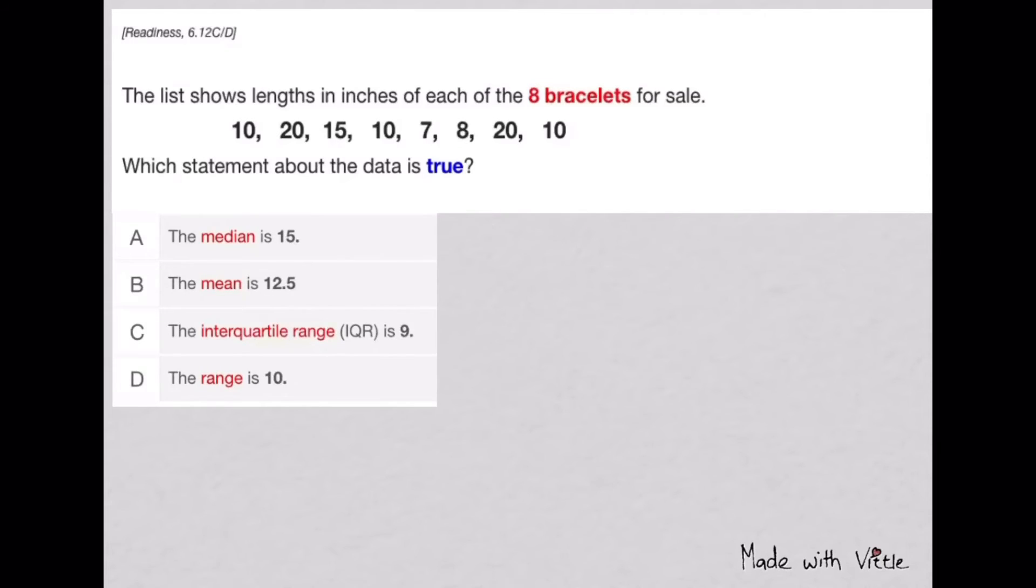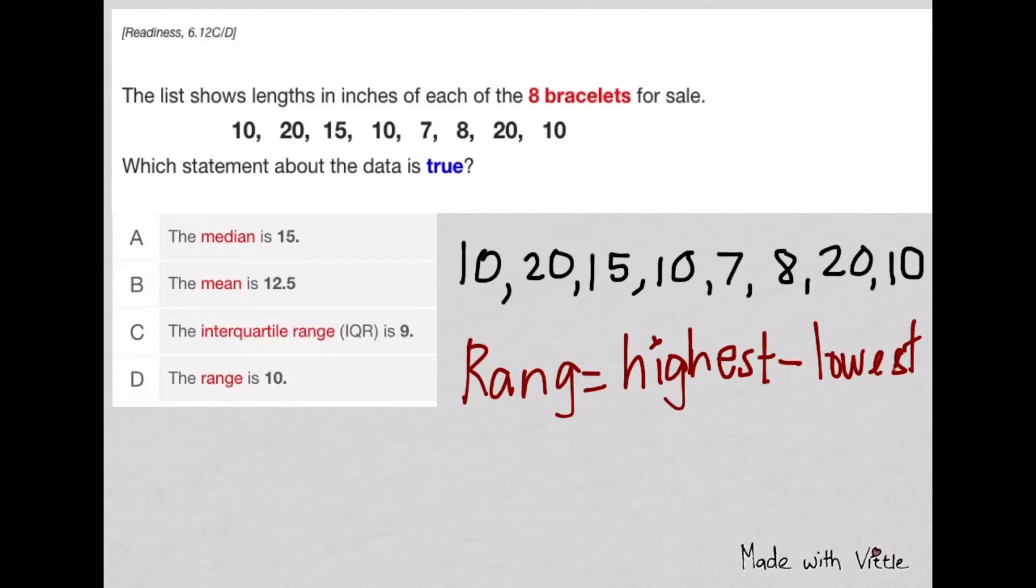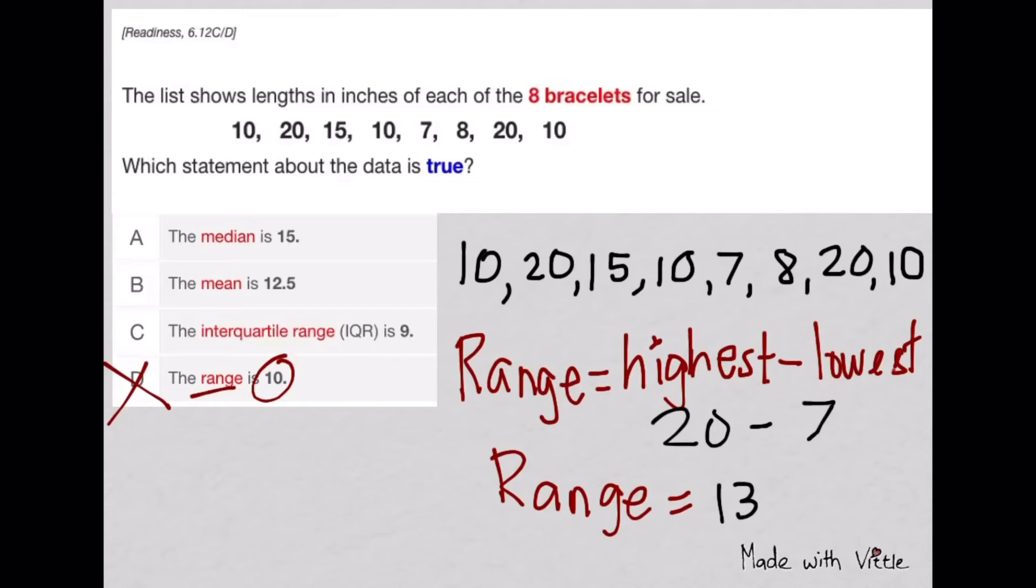The list shows lengths in inches of each of the 8 bracelets for sale. Which statement about the data is true? Copy the numbers down. After copying, find the easiest one first. Range is the easiest because you just subtract highest minus lowest. The range is 13, and look at letter D, it says 10, therefore cancel this because it's wrong. Then find the next one that's easier - median, the middle number.